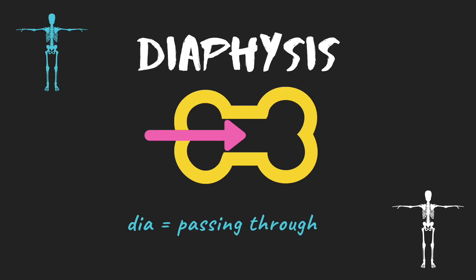Diaphysis — look at 'dia', just like diameter, it passes through. So the diameter passes through the circle, and the diaphysis is the bit that passes through the bone — the middle part of the bone. When you compare it with epiphysis and metaphysis, that is the main difference: the start of the word, these prefixes.